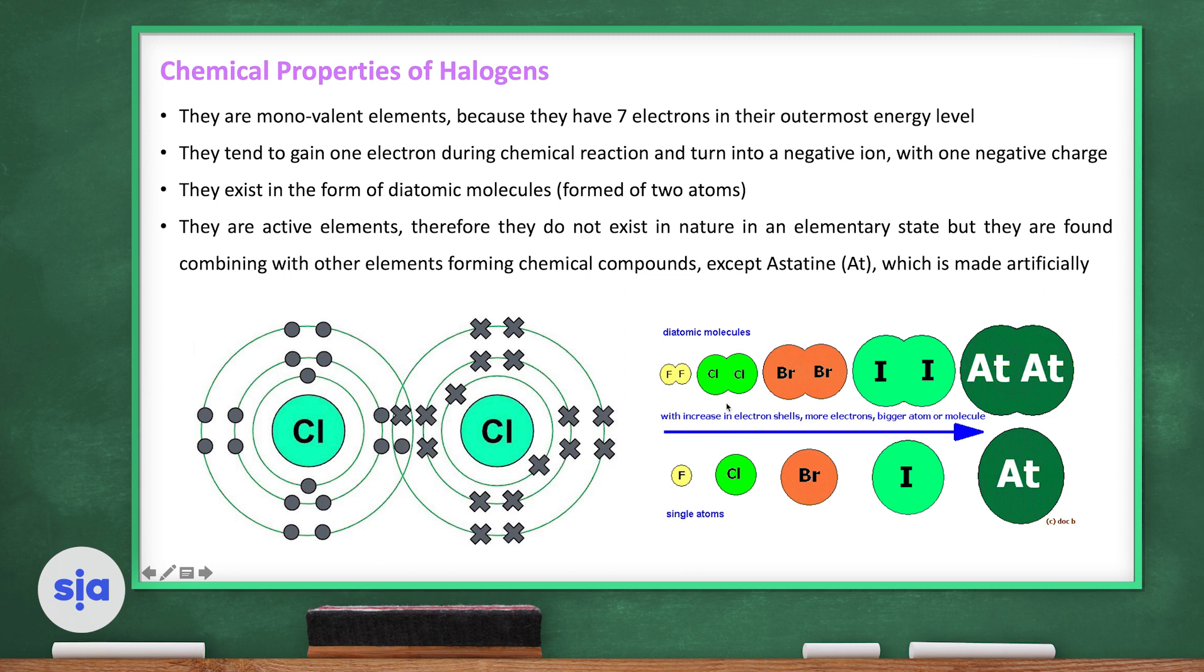Chlorine, the same. Bromine, the same. Iodine, the same. And astatine, the same. But this astatine is not naturally found. It is artificially made.